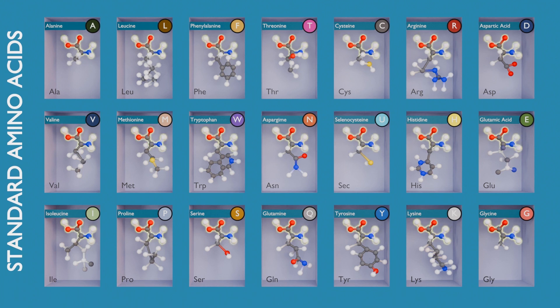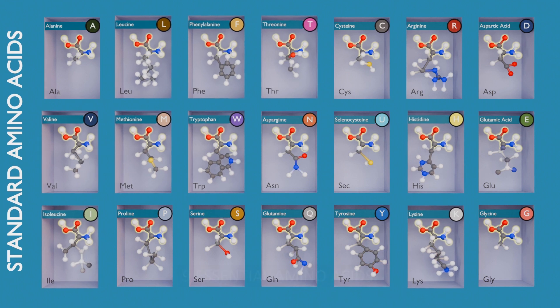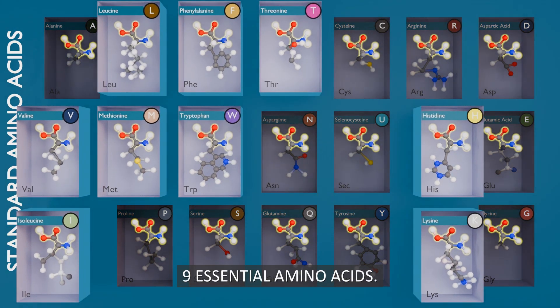There are nine essential amino acids in the cell: valine, leucine, isoleucine, methionine, phenylalanine, threonine, histidine, and lysine.